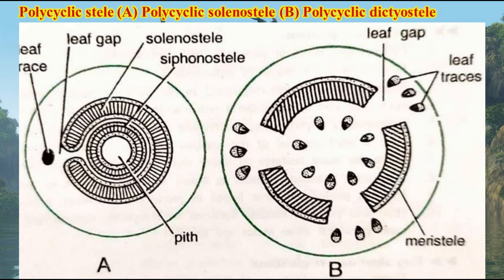These diagrams represent the polycyclic stele. Diagram A is polycyclic solenostele, and diagram B is polycyclic dictyostele — you can see two rings of vasculature in polycyclic dictyostele and two rings of stele even in polycyclic solenostele. In the case of dictyostele, the stele is broken into a number of bundles.